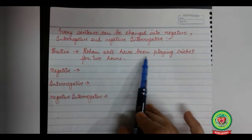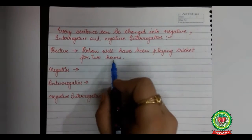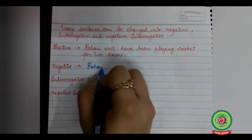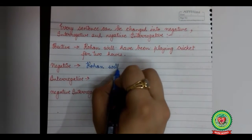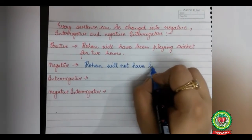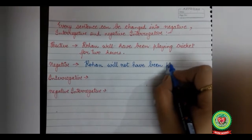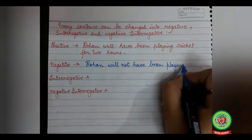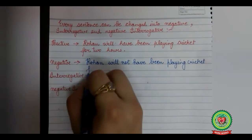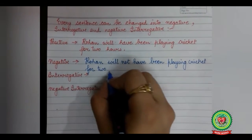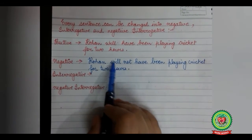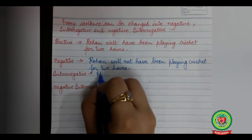See the sentence: 'Rohan will have been playing cricket for two hours.' To make it negative, we will add 'not' with our helping verb, so the answer will be: 'Rohan will not have been playing cricket for two hours.' To make it interrogative, we bring our helping verb outside and the answer will be: 'Will Rohan have been playing cricket for two hours?'